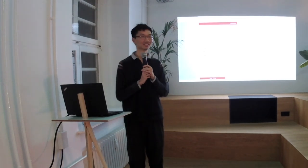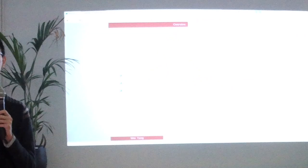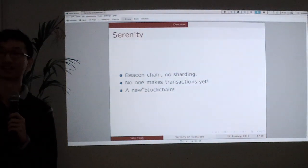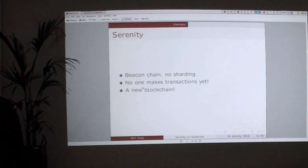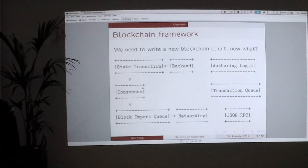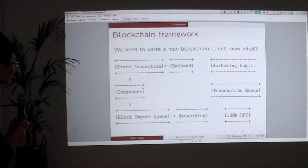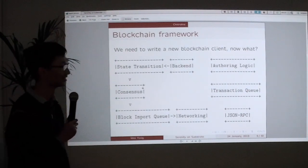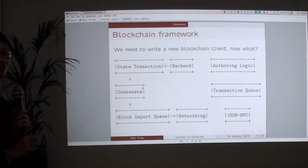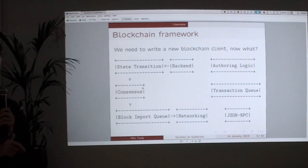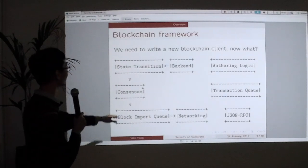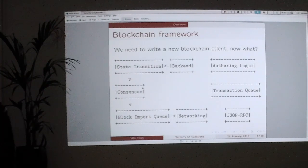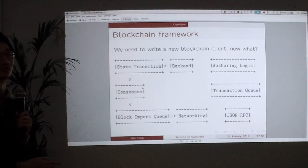Nobody is able to make regular transactions on the beacon chain yet. The only thing you can do is become a validator and attest to blocks or propose blocks. But we need a new blockchain client. A blockchain contains a lot of functionalities. The most important parts are probably state transition and consensus — that's what you will find if you're currently looking into the beacon chain specification. In the future, we will also need to figure out how our clients actually communicate with other peers.